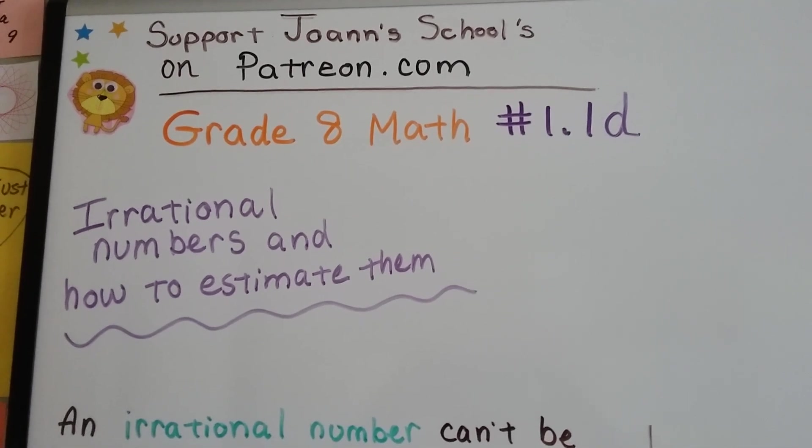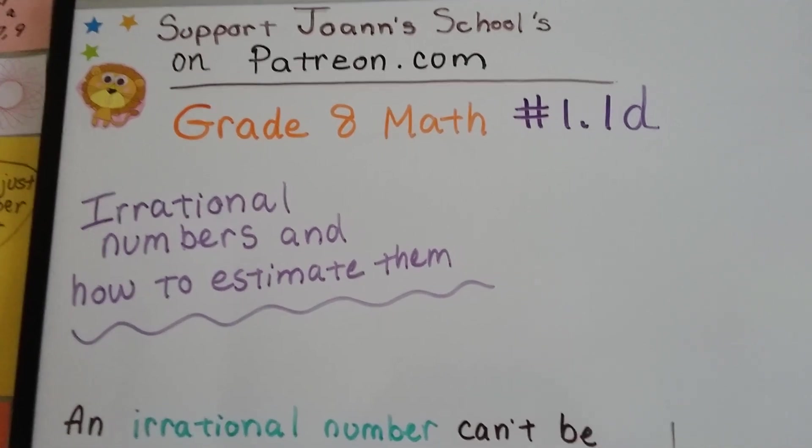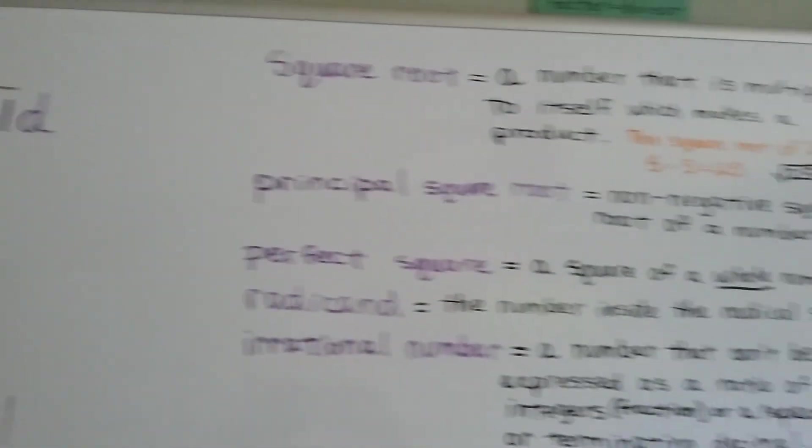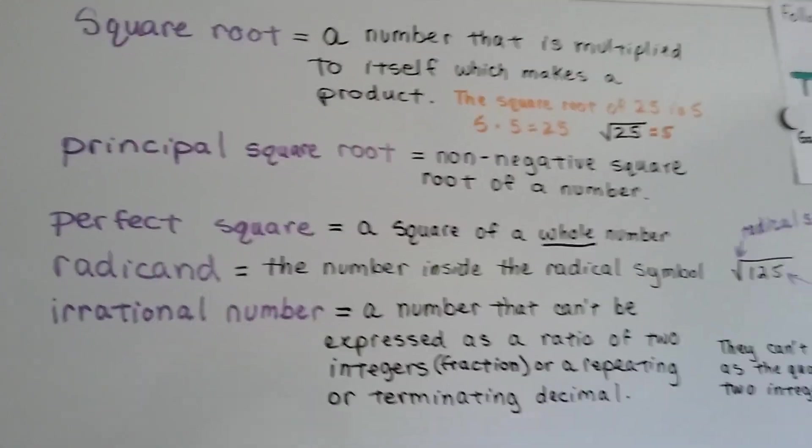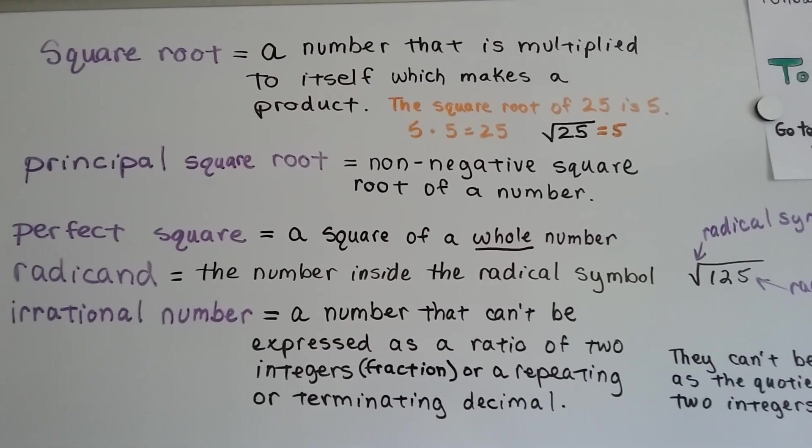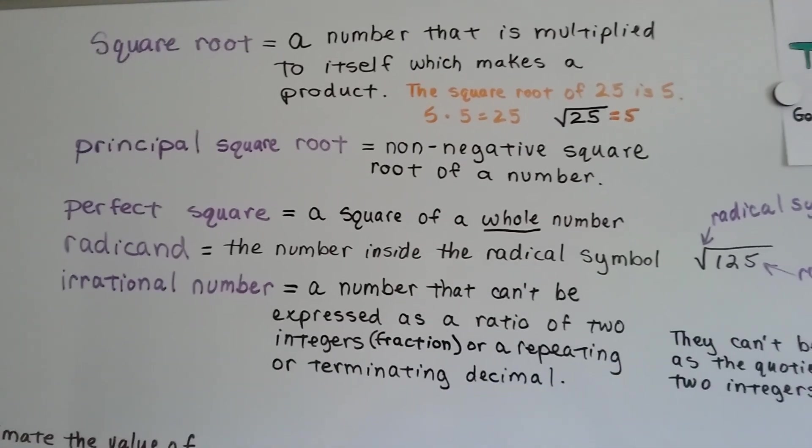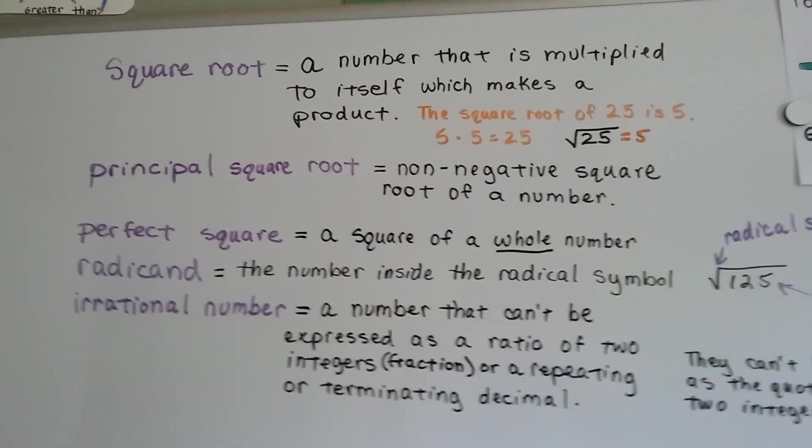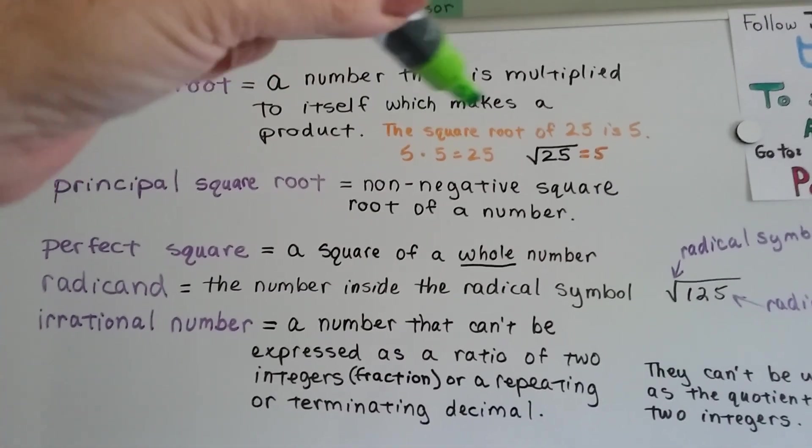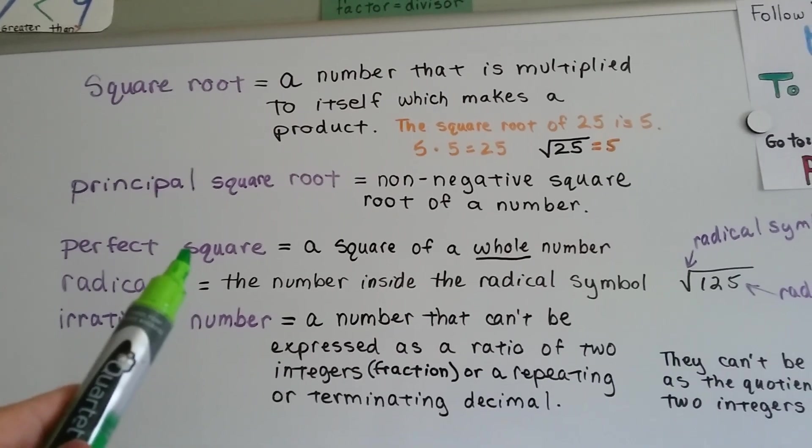Grade 8 math, number 1.1d: irrational numbers and how to estimate them. We talked before about square roots - it's a number that's multiplied to itself that makes a product. The square root of 25 is 5 because 5 times 5 equals 25. It's multiplied to itself and equals 25.